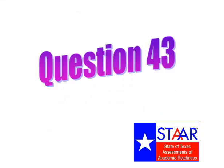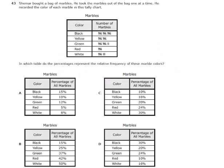Question 43. Shamar bought a bag of marbles. He took the marbles out of the bag one at a time and recorded the color of each marble in his tally chart. In which table do the percentages represent the relative frequency of these marble colors? Pause the video now.